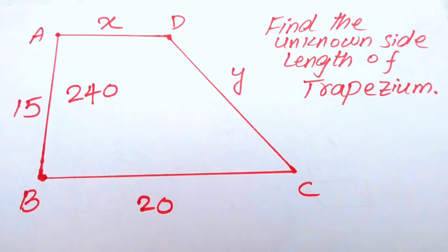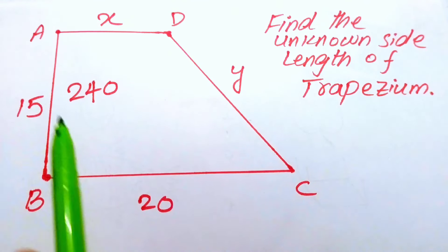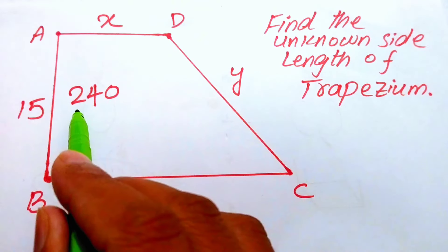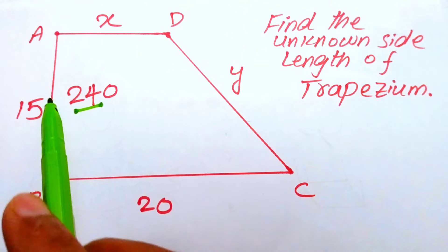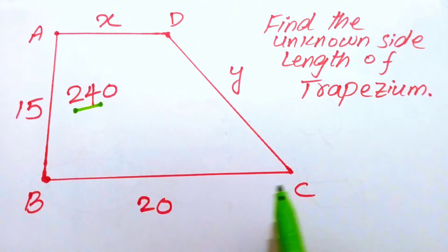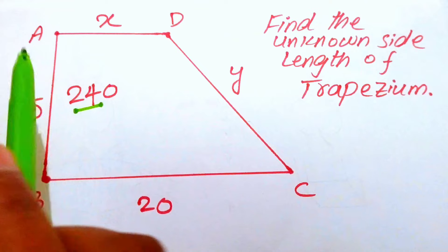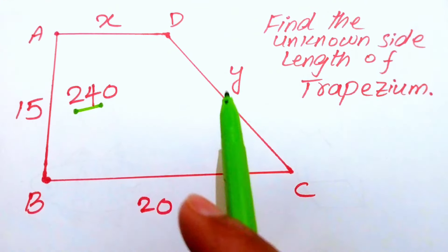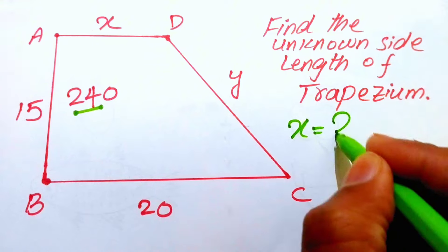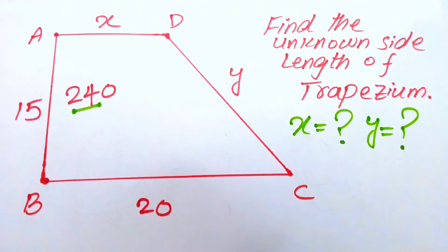Hello everyone, welcome back to the Map of Mathematics. In this video we are going to solve this math olympiad geometry problem. We have a trapezoid ABCD in which the area is 240 meters, one side length AB is 15 meters, and the other side length BC is 20 meters. We need to find the two unknown side lengths, denoted as x and y.